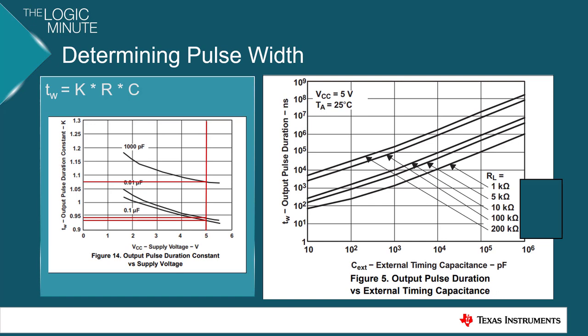For example, if we wanted a pulse width of one millisecond, we would start from 10 to the sixth, and we would go over. And at 200 kilo ohms, we would need an 8 nanofarad capacitor. At 100 kilo ohms, we would need a 12 nanofarad capacitor. At 10 kilo ohms, we would need a 100 nanofarad capacitor.